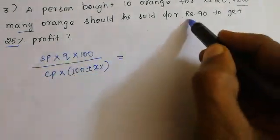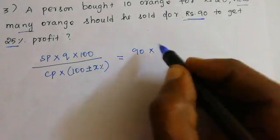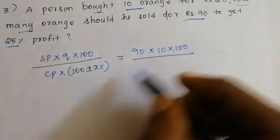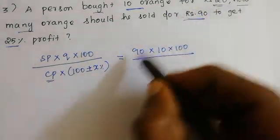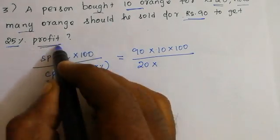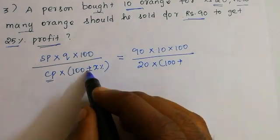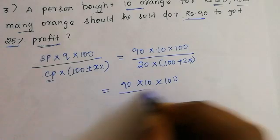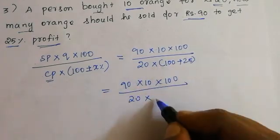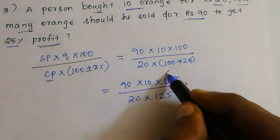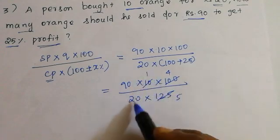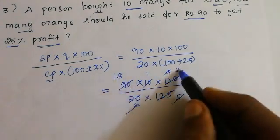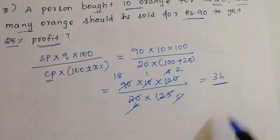Selling price: sold for 90. Into quantity: 10 oranges, into 100. Formula: 100 is cost price — how much? 20. Profit is plus. 100 plus 25. So now: 90 into 10 into 100, divided by 20 into 125. Cancel: 25 cancels 4 times, 5 times, 1 times, 2 times. Done.